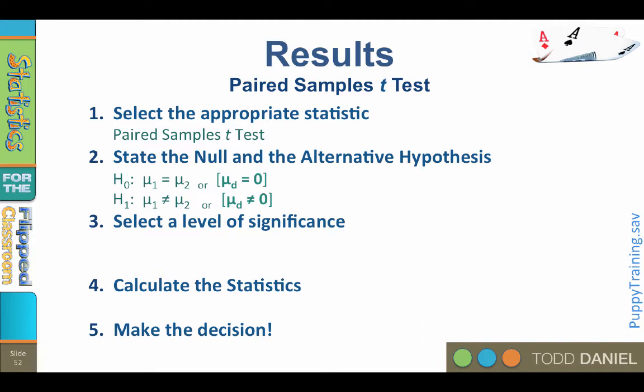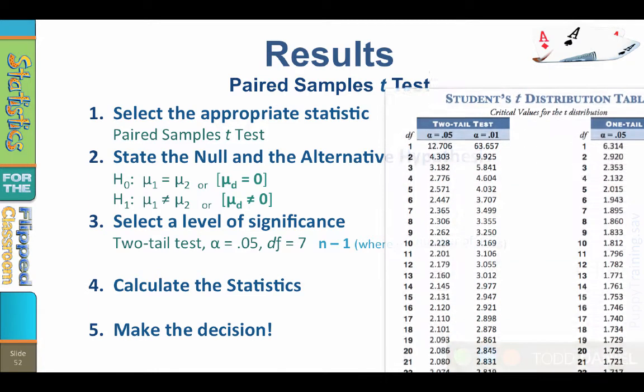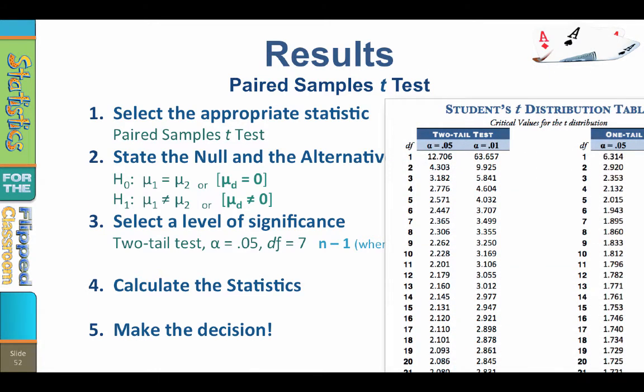Step 3, select a level of significance. We have already established that this is a two-tailed test. Our alpha level is going to be 0.05. The degrees of freedom for the paired samples t-test is n-1, where n is the number of pairs of samples. We have eight pairs of puppies divided into two groups, so n-1 equals 7. From student's t-distribution table, the critical value for a two-tailed test, alpha equals 0.05, degrees of freedom equals 7, is a critical value of positive-negative 2.365.